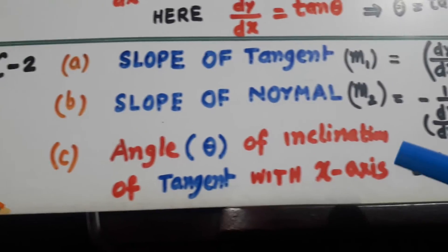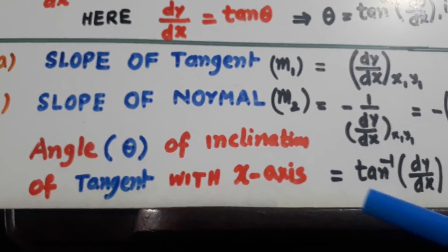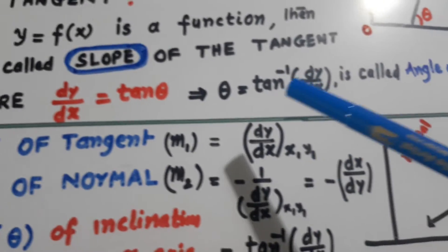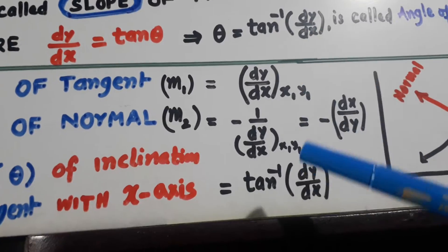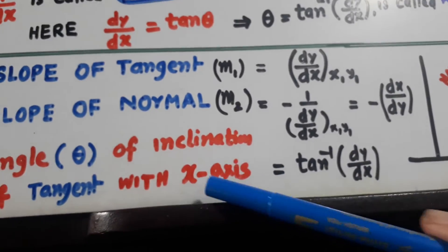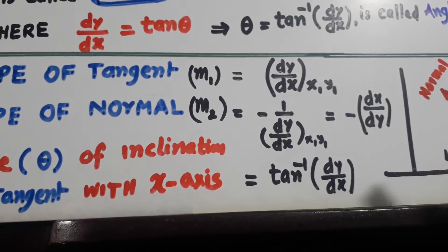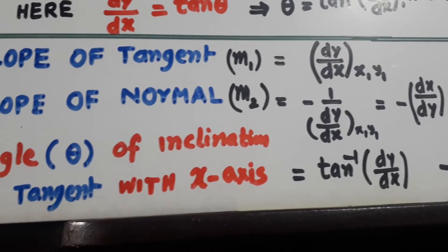Now next is angle of inclination of tangent with x-axis that we have already discussed. It is theta equal to tan inverse dy by dx. So it is theta. It is equal to tan inverse dy by dx. Now let us go further.